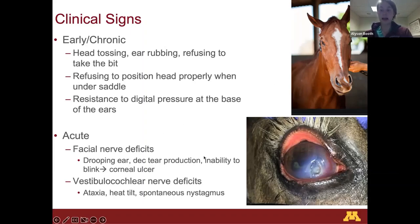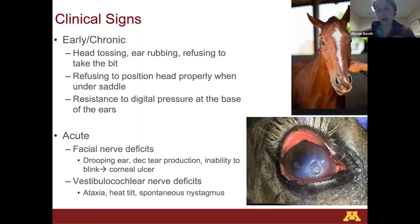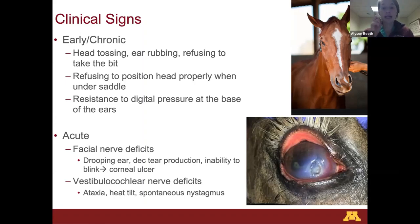Another sign horses can have is vestibular cochlear nerve deficits — sometimes just the facial nerve, sometimes just the vestibular cochlear nerve, or sometimes both together. The vestibular cochlear nerve deficit is the scariest one for owners. You come out and your horse is suddenly super ataxic — they don't know where their feet are, they're not comfortable walking, their head tilts to one side, their eye develops nystagmus going back and forth, and the horse becomes super uncoordinated. Horses themselves can get really stressed when they feel like they've lost control.